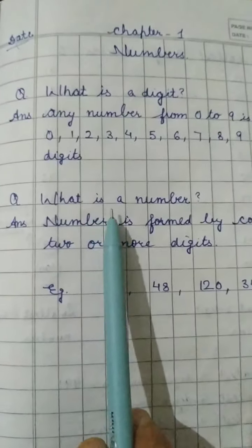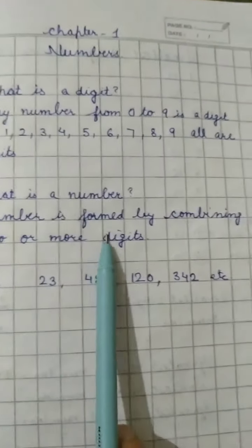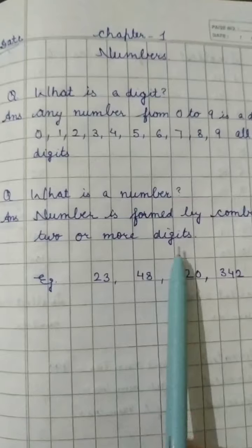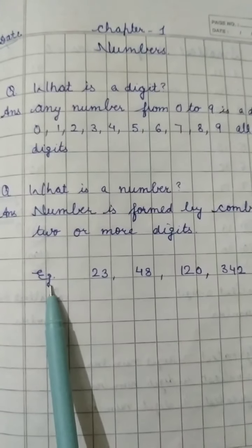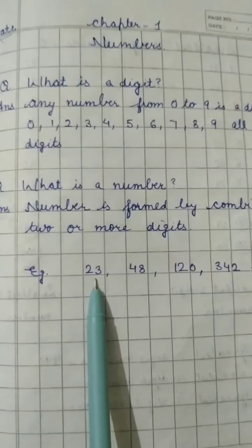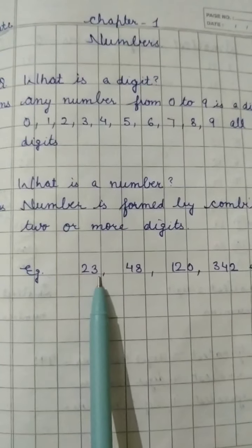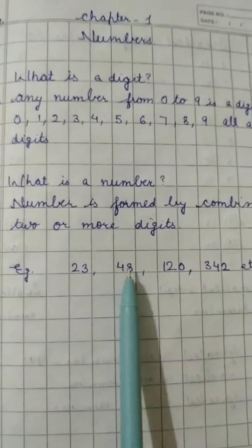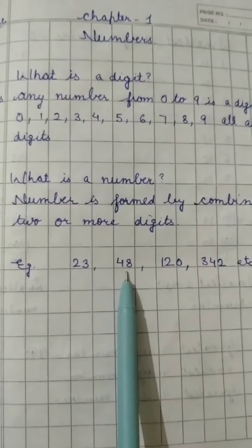Second one is what is a number? Number is formed by combining two or more digits. See in these examples I have taken the digits like in the first one I have taken two digits 2 and 3. So the number is 23 two digit number. 4, 8, 48 this is also a two digit number.